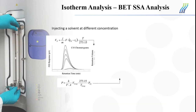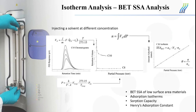By injecting only a single probe at different concentrations, the adsorption isotherm can be determined. From the adsorption isotherm, the BET specific surface area, the adsorption capacity, or Henry's adsorption constant can also be determined.